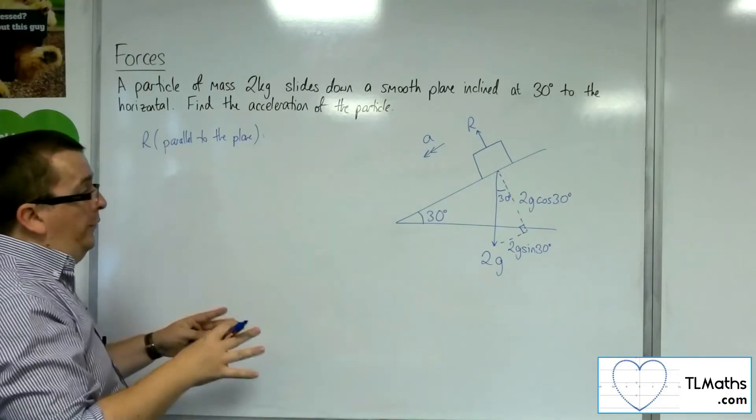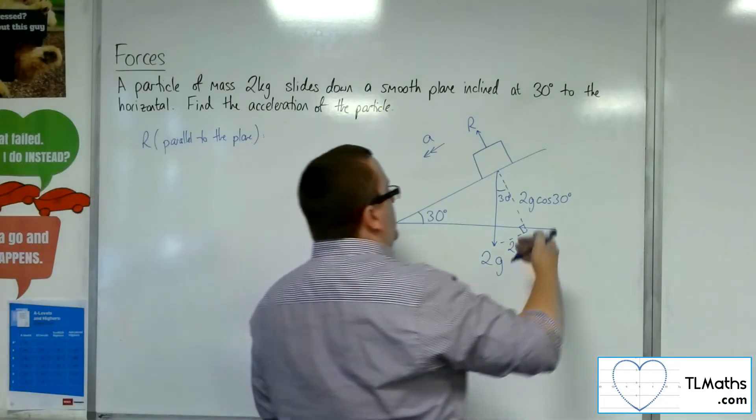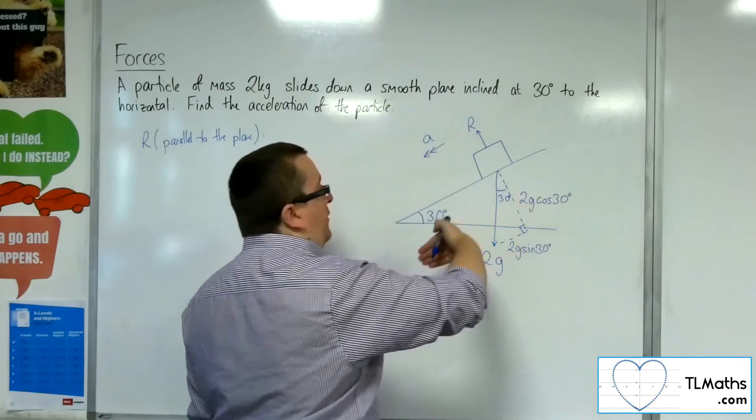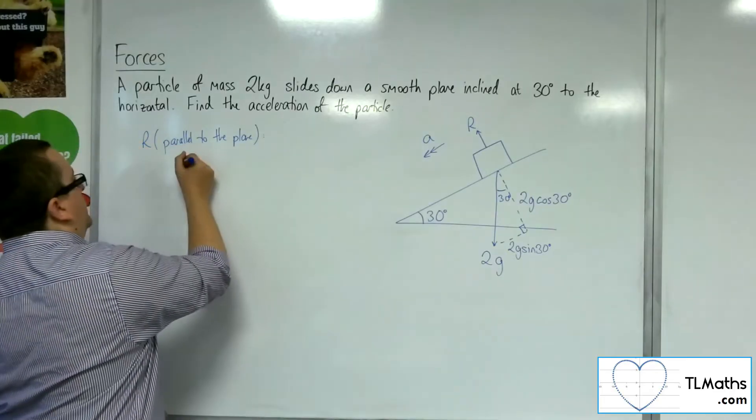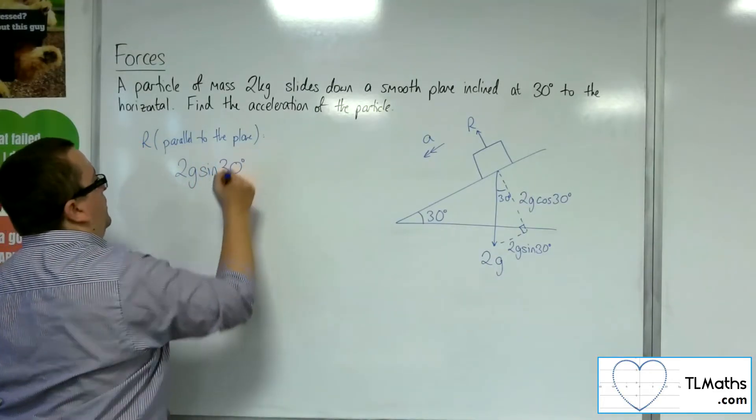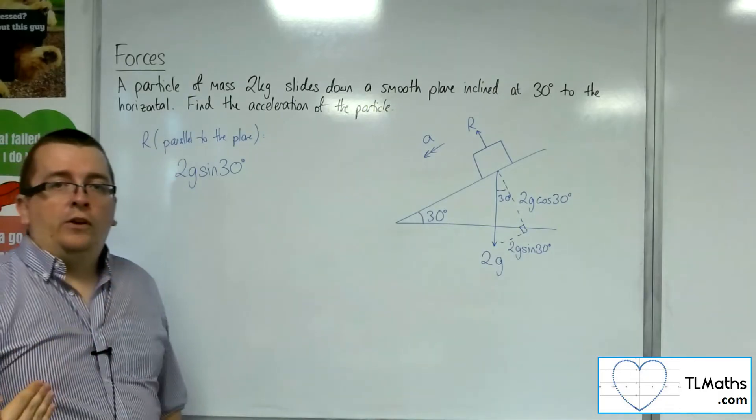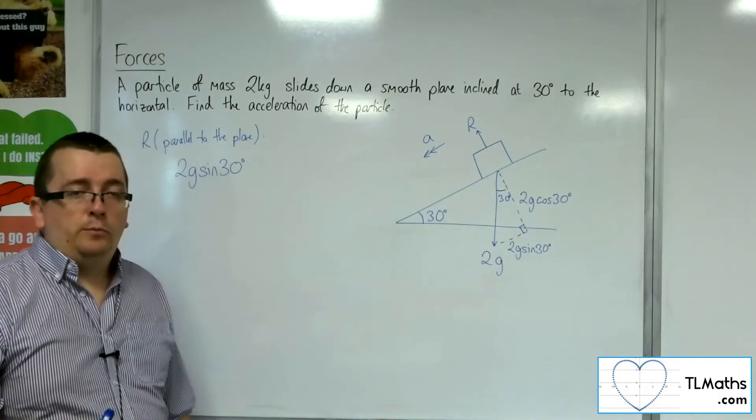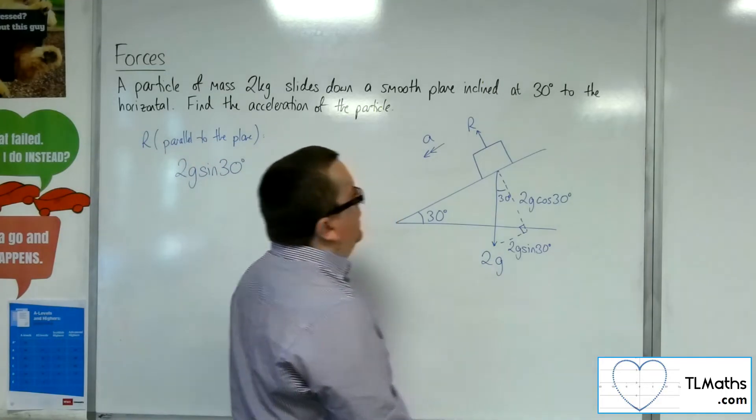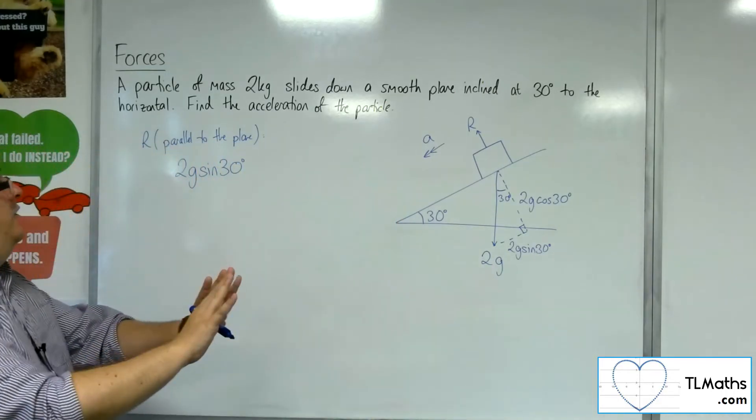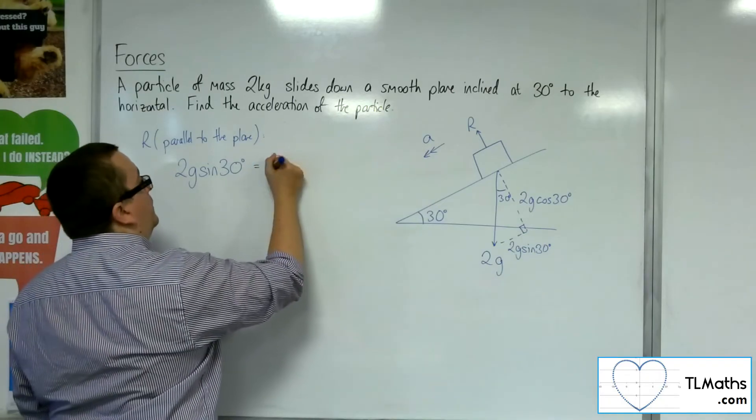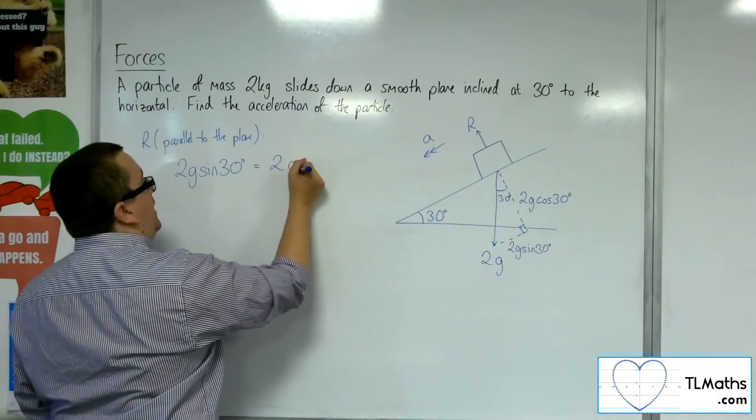So the net force is just the weight, that 2G sine 30. So that's the only thing that is making it slide down the slope. The gravity pulling on the particle. There's nothing working against me. So that is the net force, and that's going to be equal to the mass times the acceleration, A.